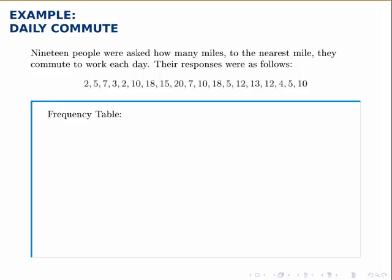Here we're going to build a simple frequency table. The problem states that 19 people were asked how many miles to the nearest mile they commute to work each day, and their responses were recorded in this data set.